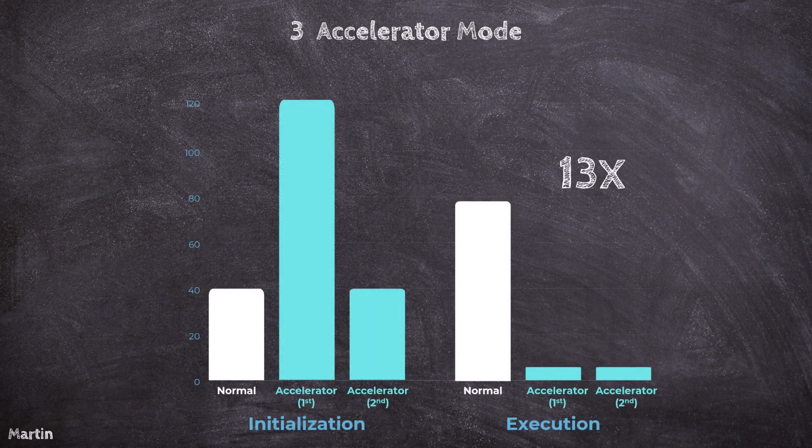This chart summarizes the simulation performance comparison between Normal Mode and Accelerator Mode. As shown, the execution time in Accelerator Mode is 13 times faster than in Normal Mode for this example, highlighting the significant performance improvement Accelerator Mode offers for iterative or long-running simulations.